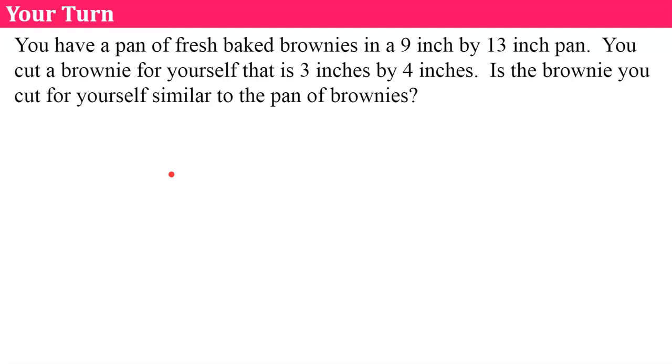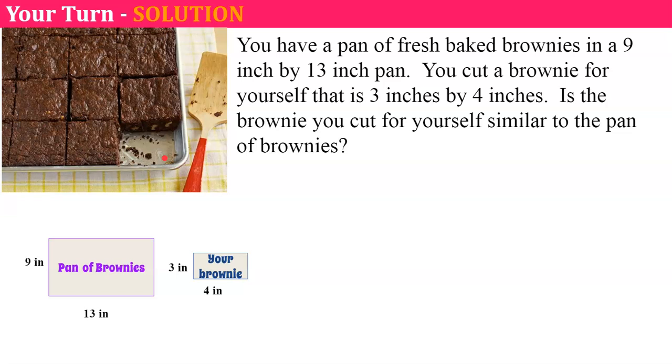Welcome back. I'm imagining that proving and explaining, defending your answer, is probably the hardest part. When you're talking about similar figures, you always want to use a proportion. Our pan of fresh baked brownies, I'm drawing a picture. My pan of brownies is 9 inches by 13 inches. My brownie I cut was 3 inches by 4 inches. So now I can say that 9 corresponds to 3 and 13 corresponds to 4, and all I have to do is set up my proportion and do the cross product property to see if they're similar.